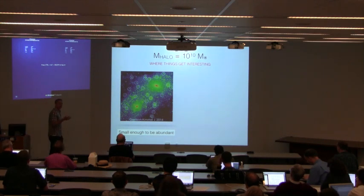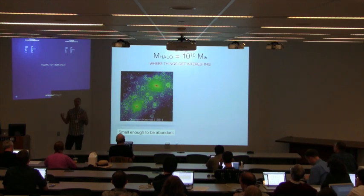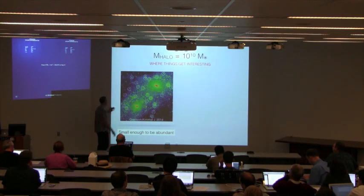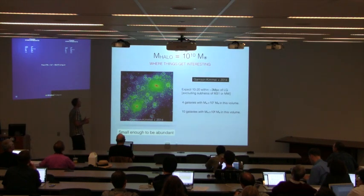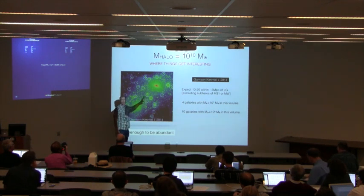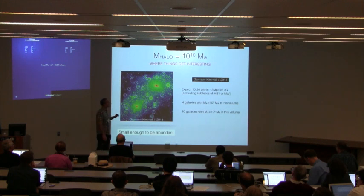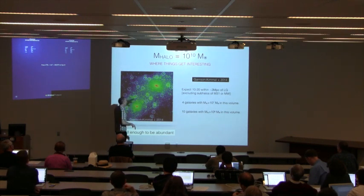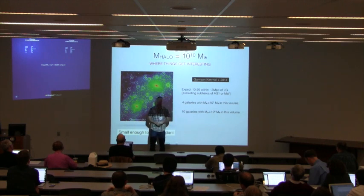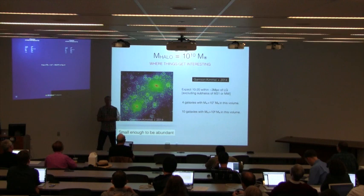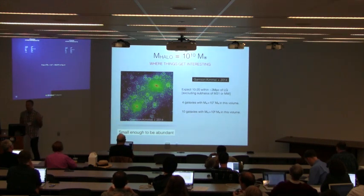This scale is small enough that there should be lots and lots of halos of this size. Here is a local volume simulation produced by Jay Garrison-Kimmel with an M31 and Milky Way type pair. If you count how many 10^10 solar mass halos there should be within about 3 megaparsecs of the local group pair center — not inside the virial radii of M31 or the Milky Way — the number is something like 10 to 20. But if you count galaxies in that volume, there are only 4 with stellar masses greater than 10^7, and about 10 with mass greater than 10^6.